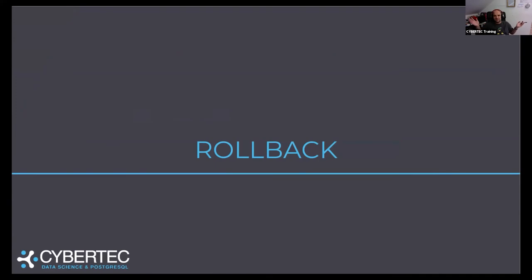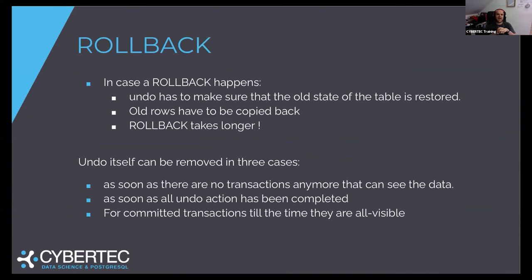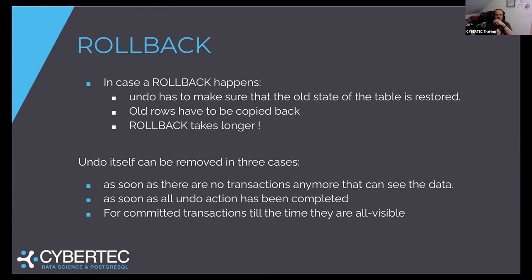Let's talk about rollback. If we commit, that's the easy part. Rollback is more of the fun part. In case a rollback happens, our undo has to make sure the old state is restored, which means it has to copy back the data. That's a major distinction between heap and Z-Heap. In a heap table, rollback is instant because it's basically just two bits — we set the transactional information and that's it. In Z-Heap, that's not so simple anymore, because we have to copy it back, and we have to handle crash scenarios, so it's going to be more complicated.